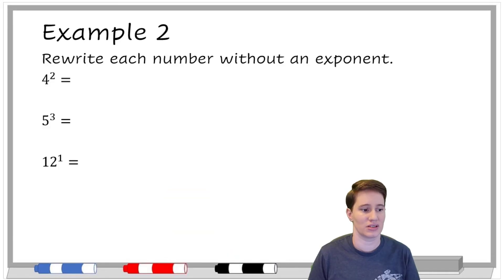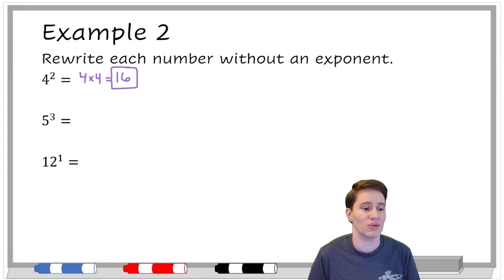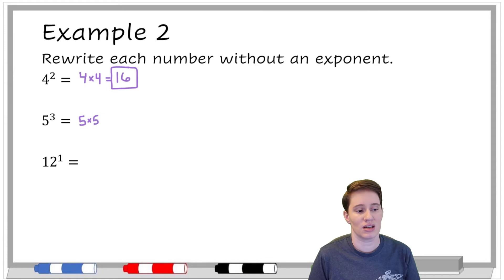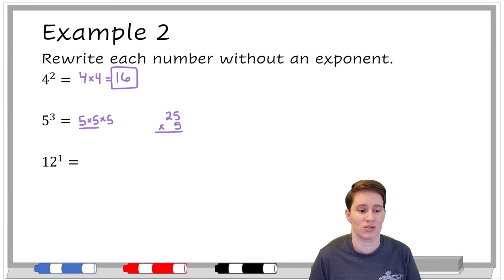Example 2: rewrite each number without an exponent. So we might write out and say: 4 squared is telling us to do 4 times 4, and we think in our head — 4 times 4 is 16. We know that from our multiplication tables, so that would be our answer. We wouldn't necessarily have to write out the 4 times 4 if we didn't want to. But for this next one — 5 to the third power — it would be a good idea to write it out, because the biggest thing is keeping track of how many times we're multiplying. So 5 times 5 is 25; we need just one more five because it was to the third power. 25 times 5 is 125.